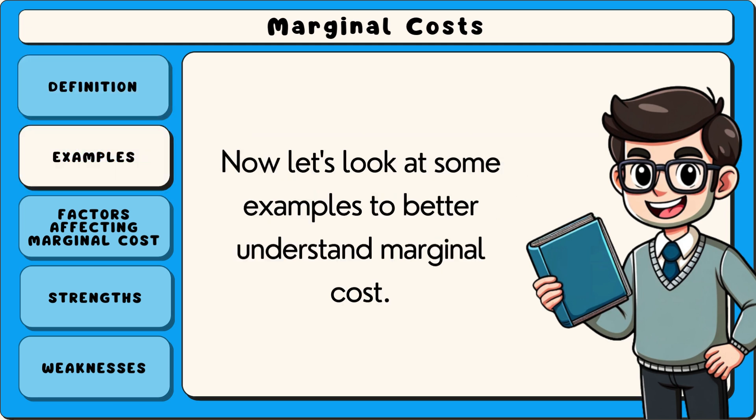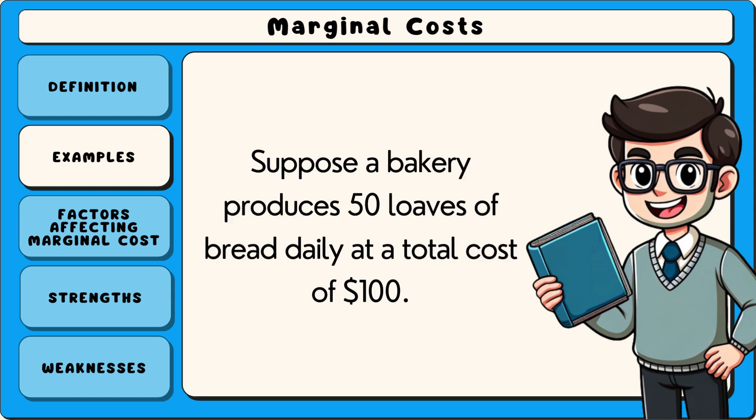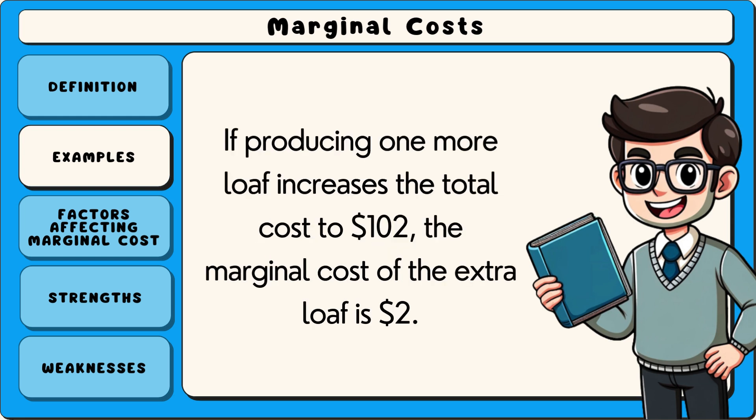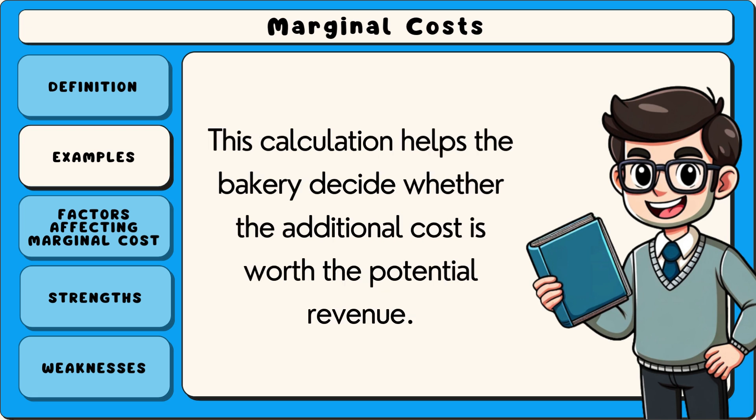Now let's look at some examples to better understand marginal cost. Suppose a bakery produces 50 loaves of bread daily at a total cost of $100. If producing one more loaf increases the total cost to $102, the marginal cost of the extra loaf is $2. This calculation helps the bakery decide whether the additional cost is worth the potential revenue.